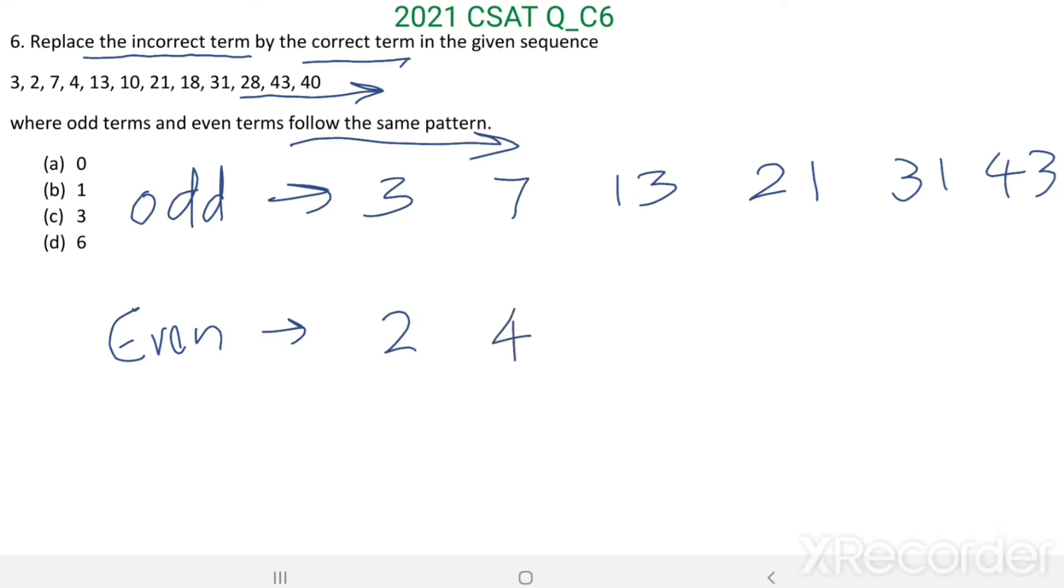Then 7 minus 3 equals 4, 13 minus 7 equals 6, 21 minus 13 equals 8, 31 minus 21 equals 10, 43 minus 31 equals 12. This is the pattern followed by the odd term series.